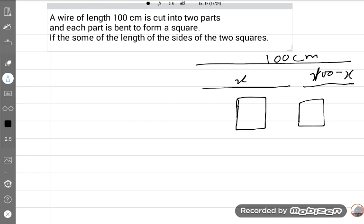But we have the whole length and we need a single side length to find out the area. So what is the total length? Total length is x. So what will be each side?